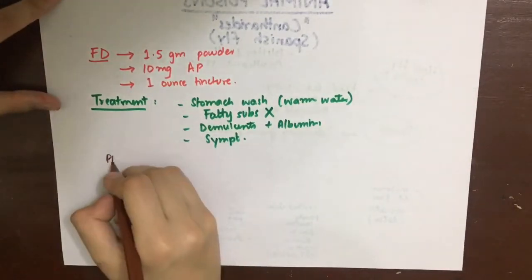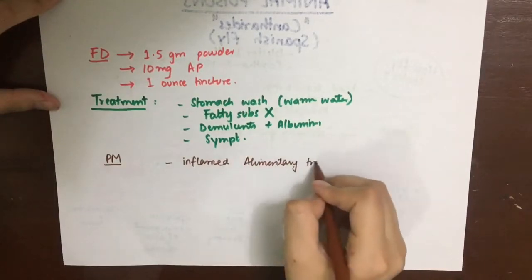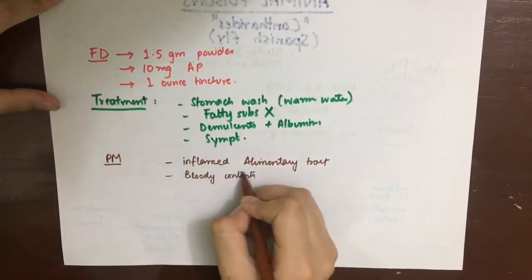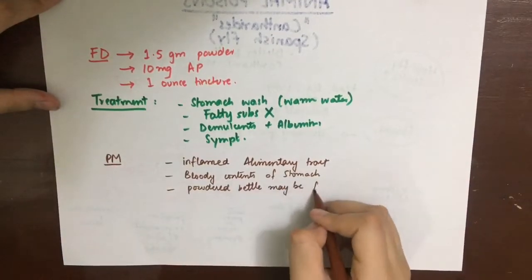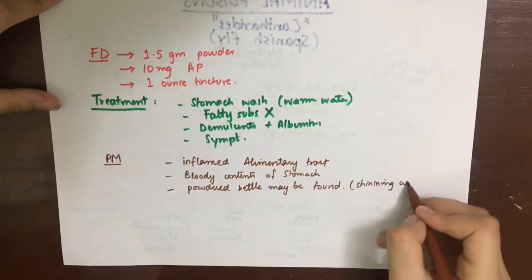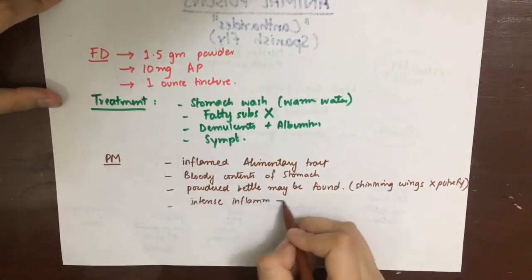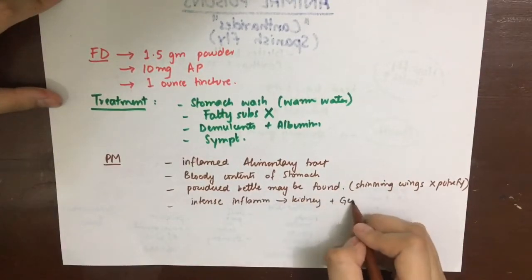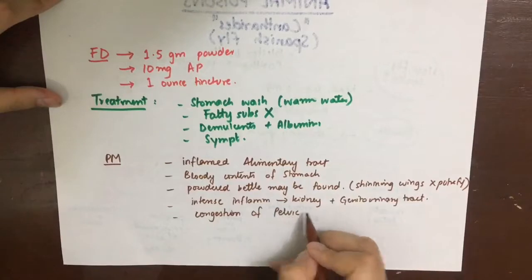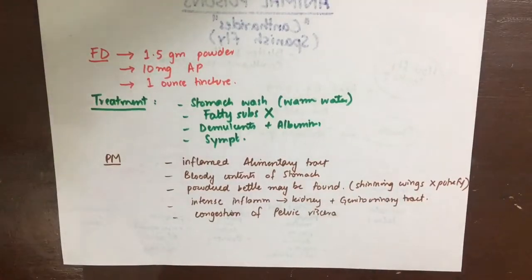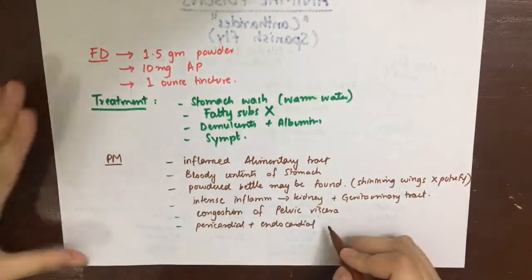Postmortem appearance includes an inflamed alimentary tract. Bloody contents may be present in the stomach, and powdered beetle can also be found there, as the shining wings resist putrefaction. There is intense inflammation of the kidneys and genitourinary tract, congestion of pelvic viscera, pericardial and endocardial hemorrhage, and edematous lungs and air passages with blood-stained mucus.